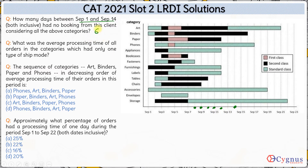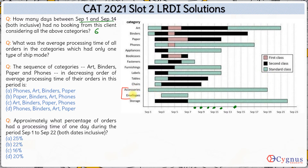So the answer to the first question is 6. The next question asks: what was the average processing time of all orders in the categories which had only one type of shipping mode? Looking at the categories, arts, binders, papers, and phones all have multiple shipping modes. The single-shipping-mode categories are accessories and envelopes.